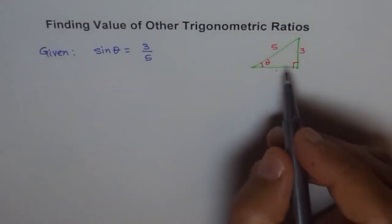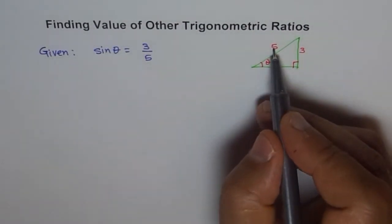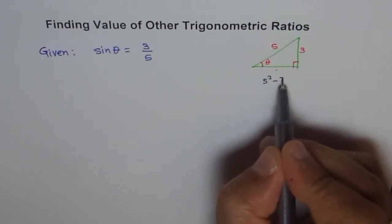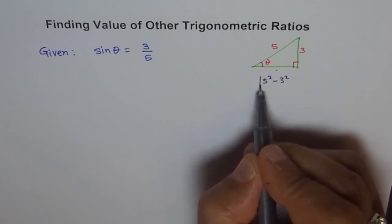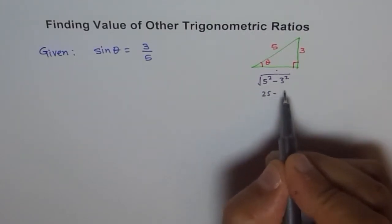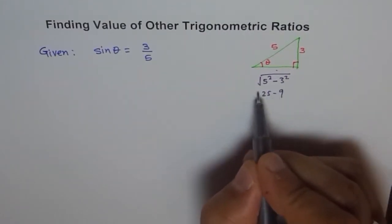So, this side is square root of 5 squared minus 3 squared. Now, how much is this? 5 squared is 25, so we get square root of 25 minus 3 squared is 9.